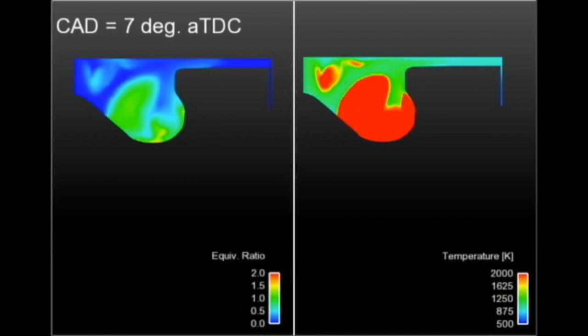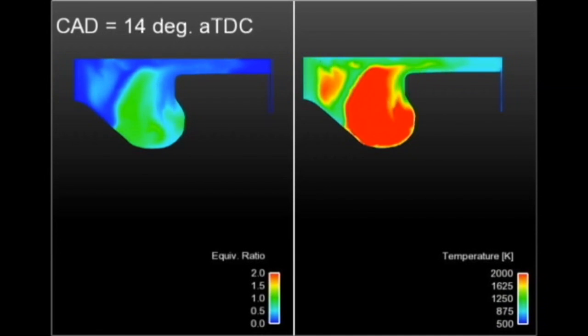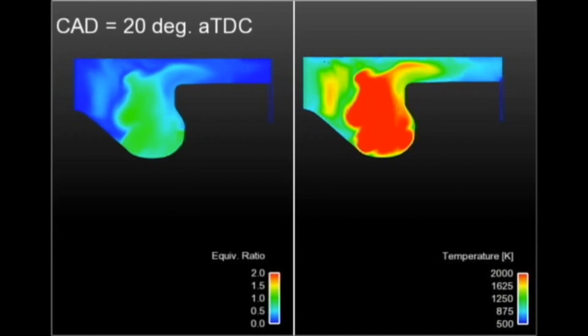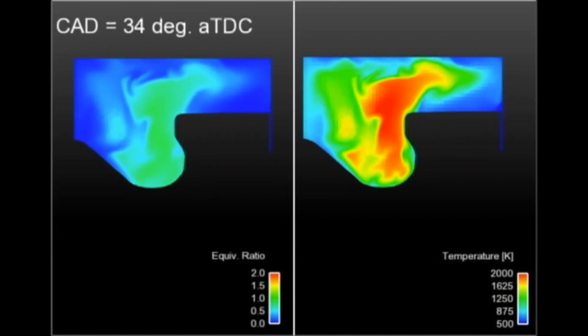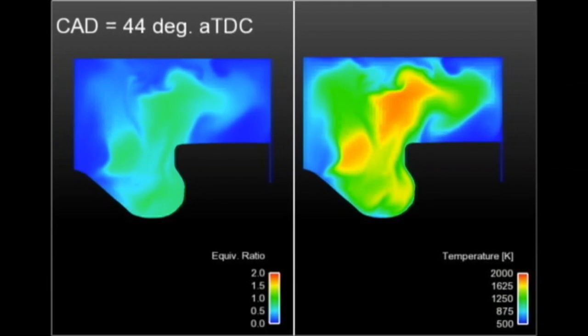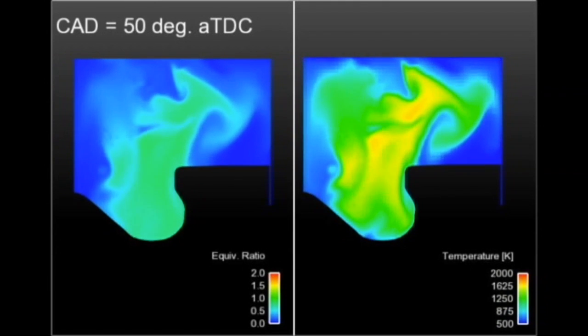Due to high levels of pre-mixing and sequential auto-ignition versus diffusion combustion, gasoline compression ignition produces less soot and oxides of nitrogen compared to diesel combustion.